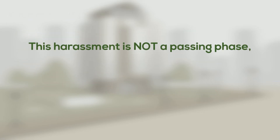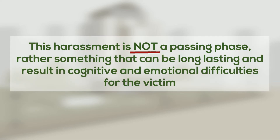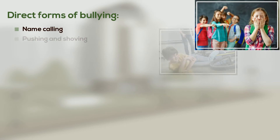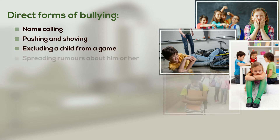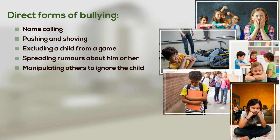This harassment is not a passing phase, rather something that can be long-lasting and result in cognitive and emotional difficulties for the victim. Direct forms of bullying might be through name-calling, pushing and shoving, excluding a child from a game, spreading rumours about him or her, and even manipulating others to ignore the child and exclude him or her as a friend in their peer group.